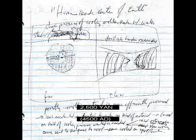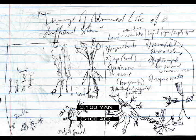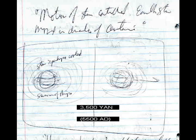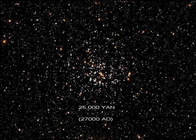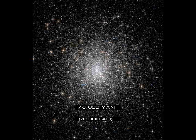Humans reach the center of the Earth. Image of advanced life of a different star. Motion of a star controlled. Earth's star moved in the direction of Centauri. Humans touch advanced life of a different star. One trillion humans. Humans inhabit 100 stars and form a globular cluster of 10 stars. Humans inhabit 1,000 stars and form a globular cluster of 100 stars.